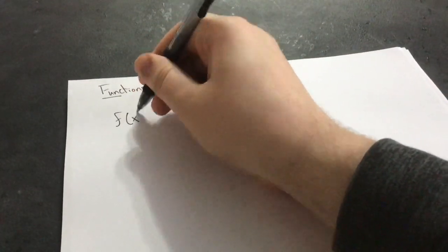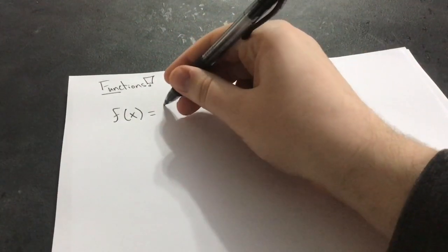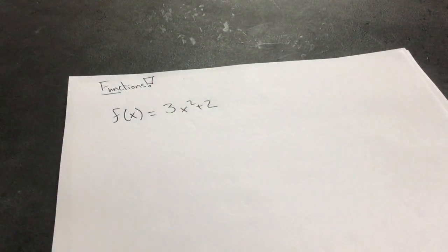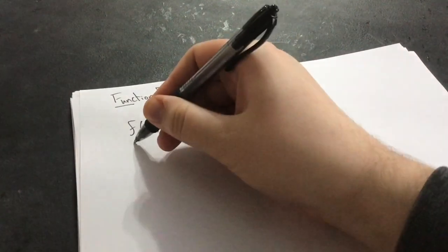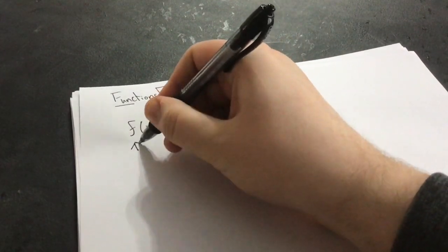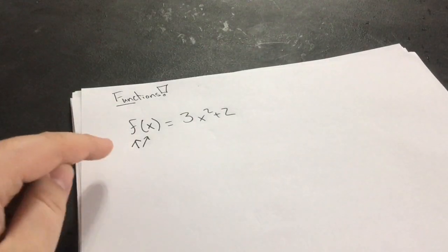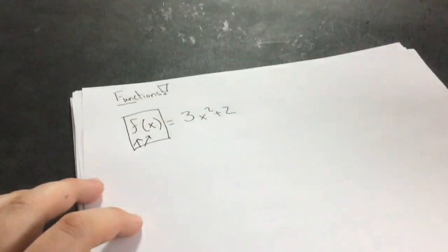A function is written like this: f of x equals, I don't know, you can have literally anything on this side, 3x squared plus 2. That's a function. So the really big key to it is this part right here. And I drew one arrow just pointing at the f, and I meant to point at it all. It's all that.